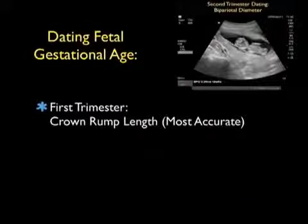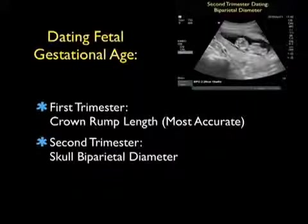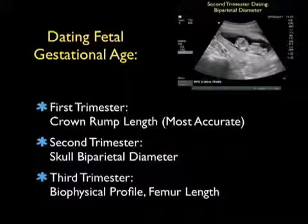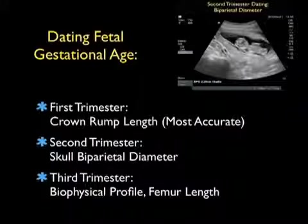The first concept we'll focus on is dating fetal gestational age. In the first trimester, we're going to use an assessment of the crown rump length. Interestingly, dating in the first trimester is actually the most accurate during all phases of pregnancy, as there's a difference in the growth curve as the fetus develops. In the second trimester, we'll measure the skull biparietal diameter, and in the third trimester, dating is composed of a biophysical profile focusing on the femur length as well as other biophysical measurements.